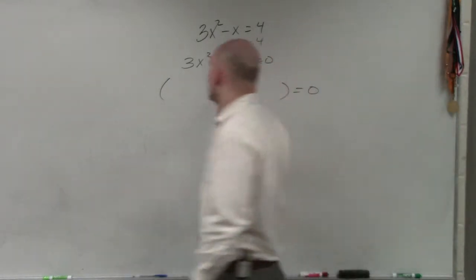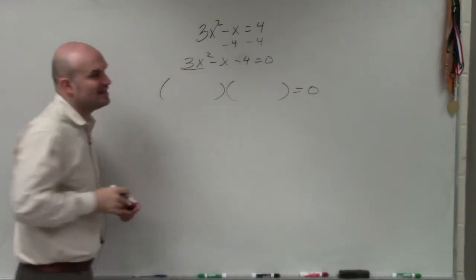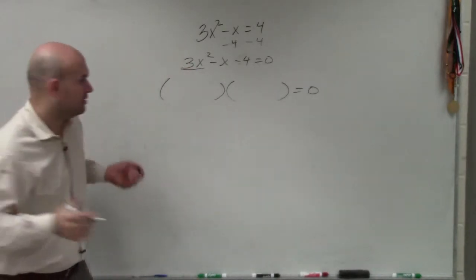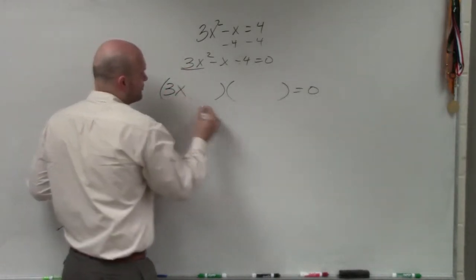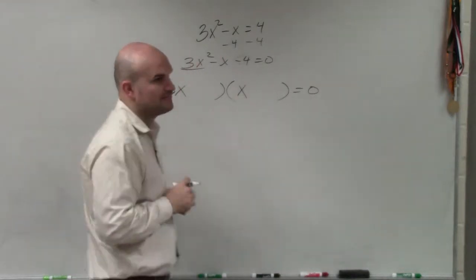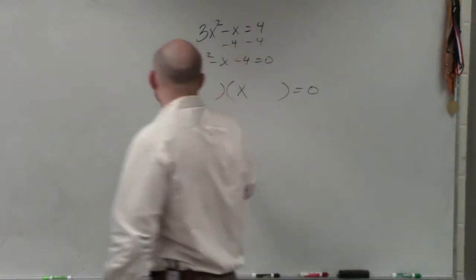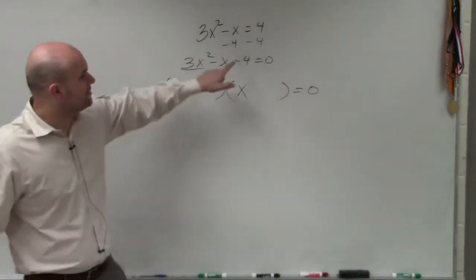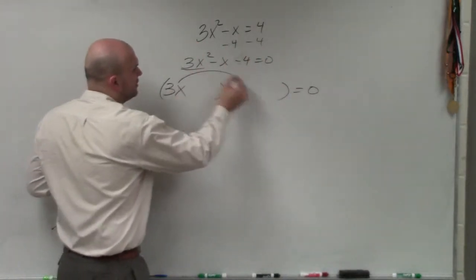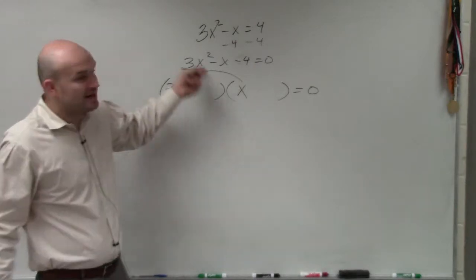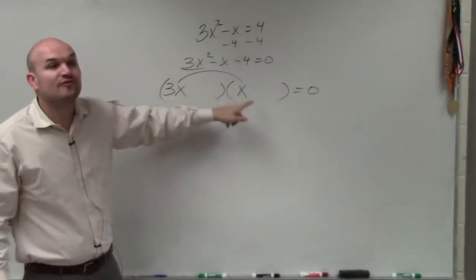Now remember, we need to determine what two numbers multiply to give us 3x. Well, really, in this case, we only have one example: 3x times x. Right? But now, remember the last term. So if you remember doing FOIL, 3x times x gives you 3x squared. So that would be the first, right?